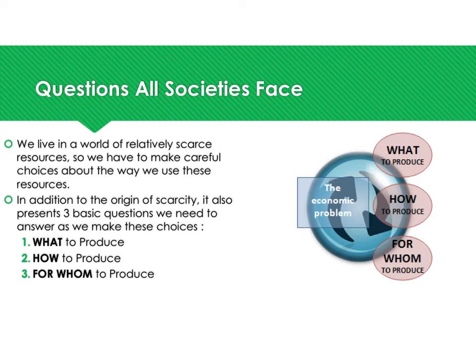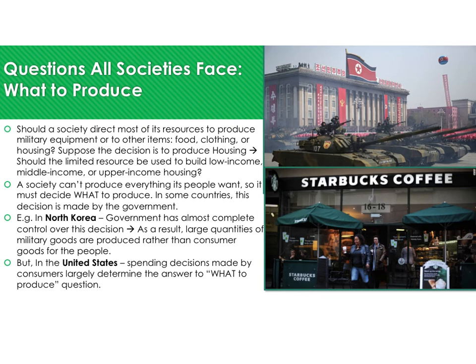Because we live in a world of relatively scarce resources, we must make careful choices about how we use them. Scarcity presents three basic questions every society must answer. Question one: what to produce? Should a society direct resources to military equipment or to food, clothing, and housing? Should limited resources be used to build low-income, middle-income, or upper-income housing? A society cannot produce everything its people want, so it must decide.